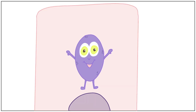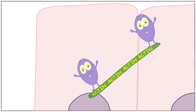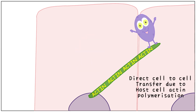It is a facultative intracellular organism. Because it's inside the cell, it escapes our body's normal defense mechanisms. It travels from cell to cell by direct transfer due to host cell actin polymerization — it's like the Listeria is riding an actin surfboard.